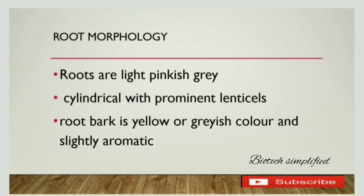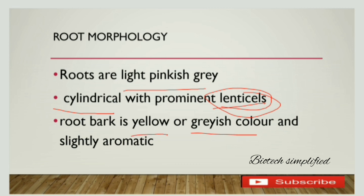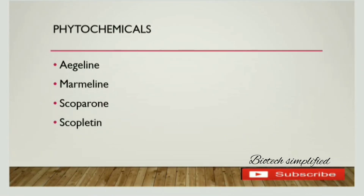Now let us discuss root morphology. The roots are light pinkish gray in color and are cylindrical. They have prominent lenticels, which are present for air exchange. The root bark is yellow or grayish in color, and the roots are slightly aromatic.